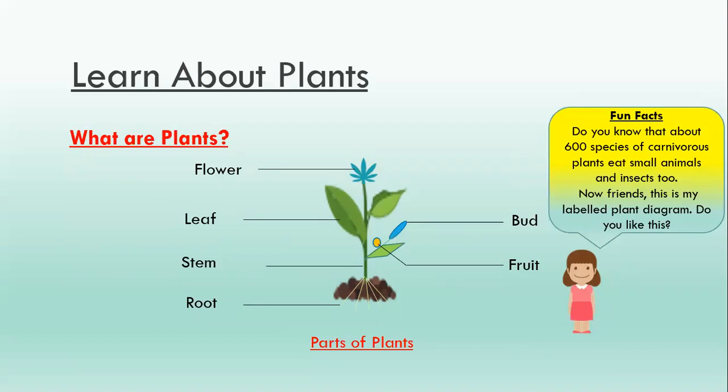Now friends, this is my labeled plant diagram. Do you like this? It has a flower, leaf, stem, root, bud, and fruit. Those are all parts of plants.